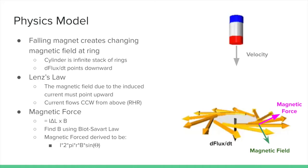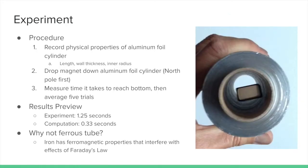The procedure includes first recording the physical properties of the aluminum foil cylinder, such as length, wall thickness, and inner radius. Then drop the magnet down the cylinder, north pole first. Finally, measure the time it takes for the magnet to reach the bottom, and average 5 trials.